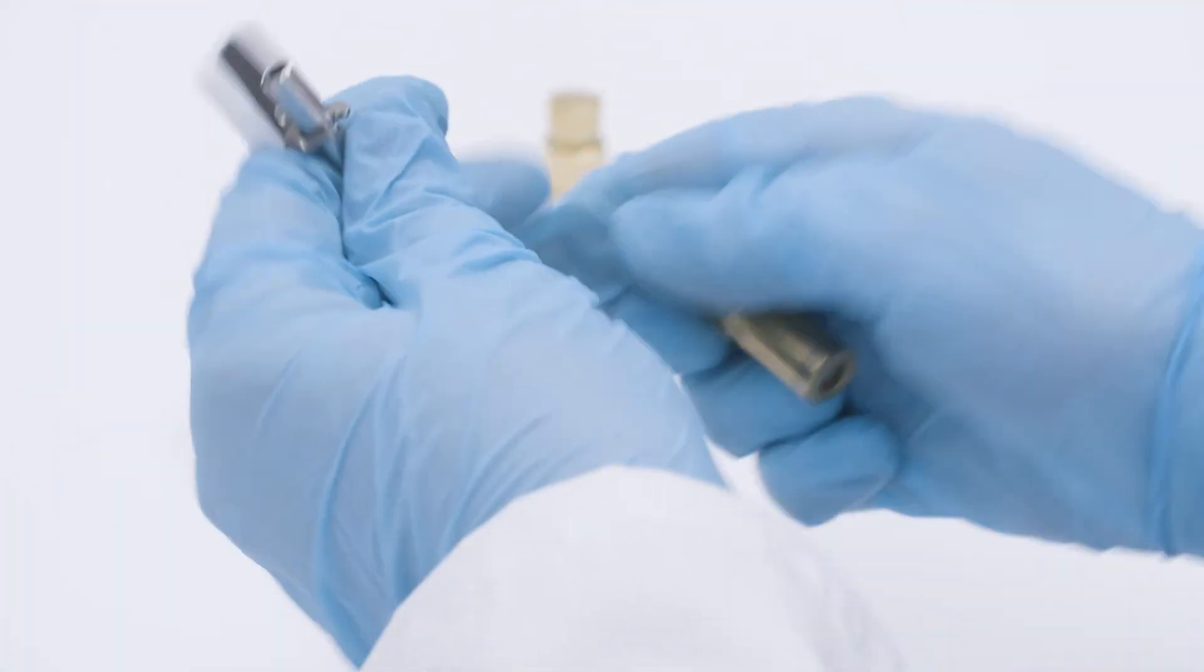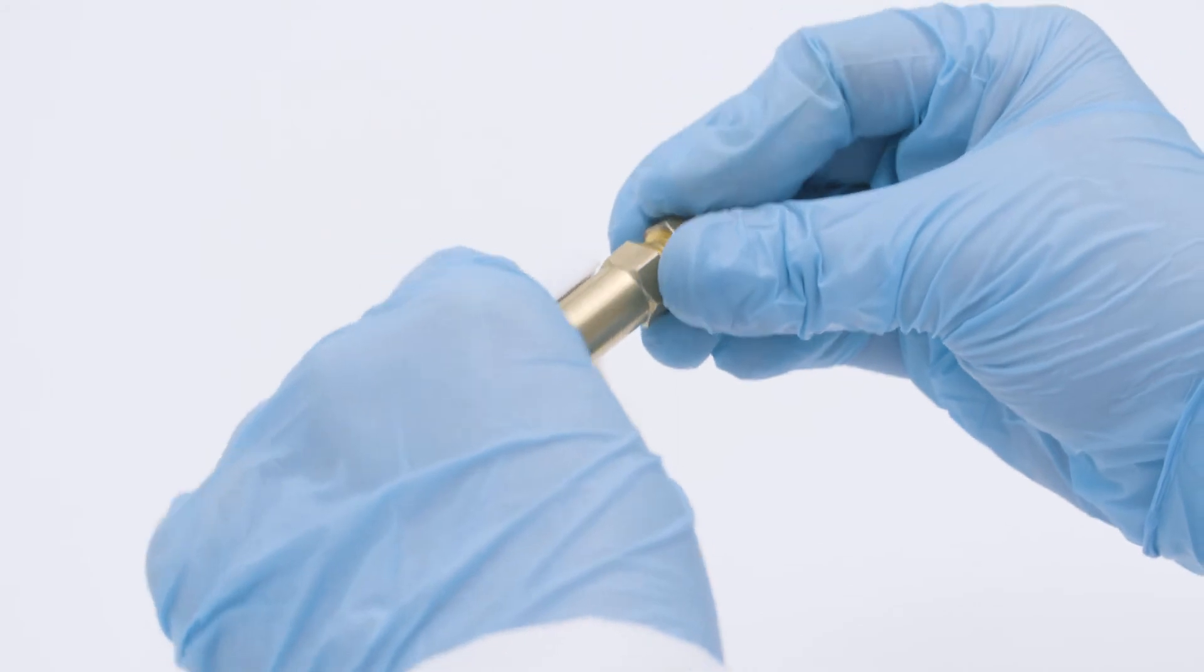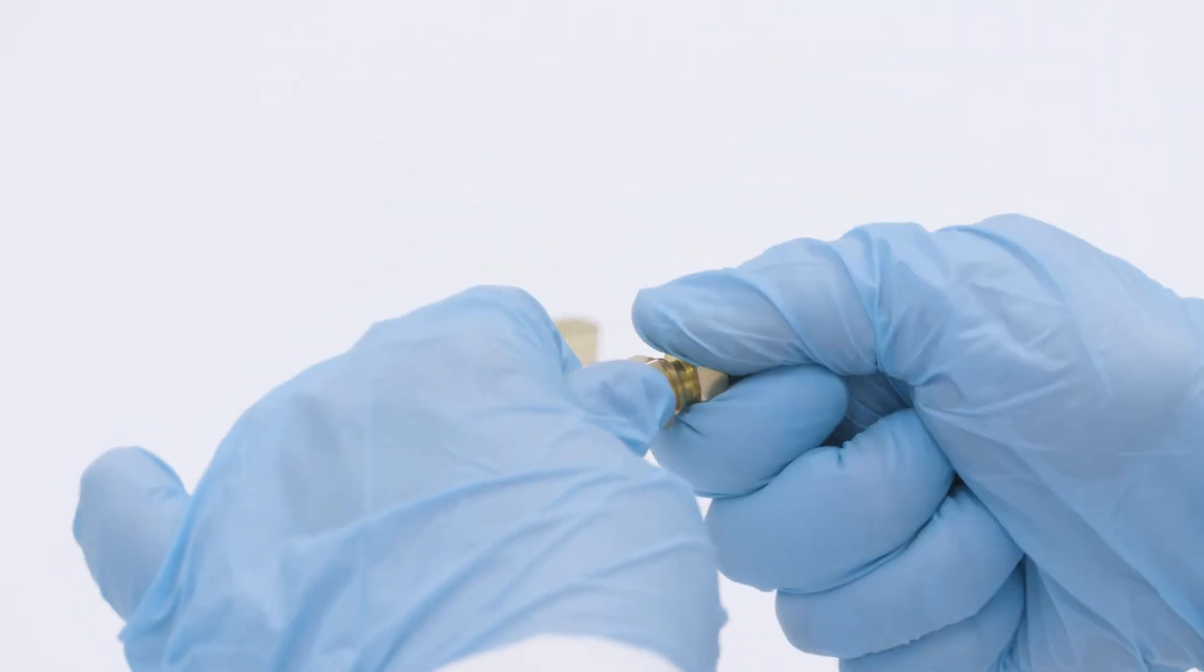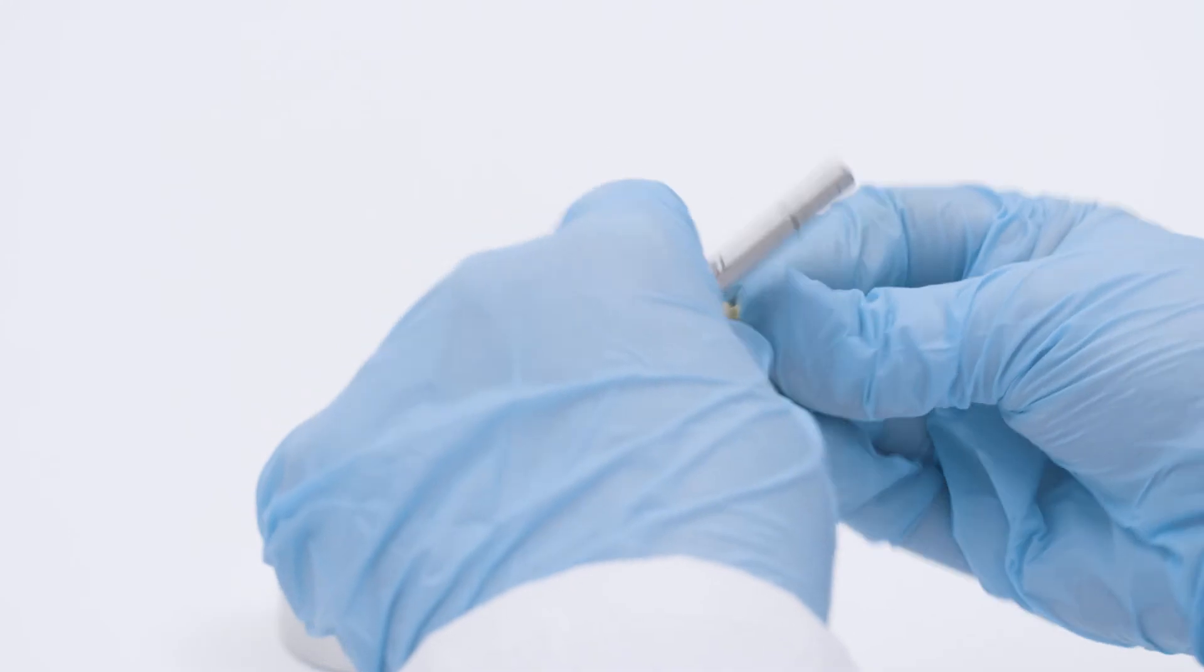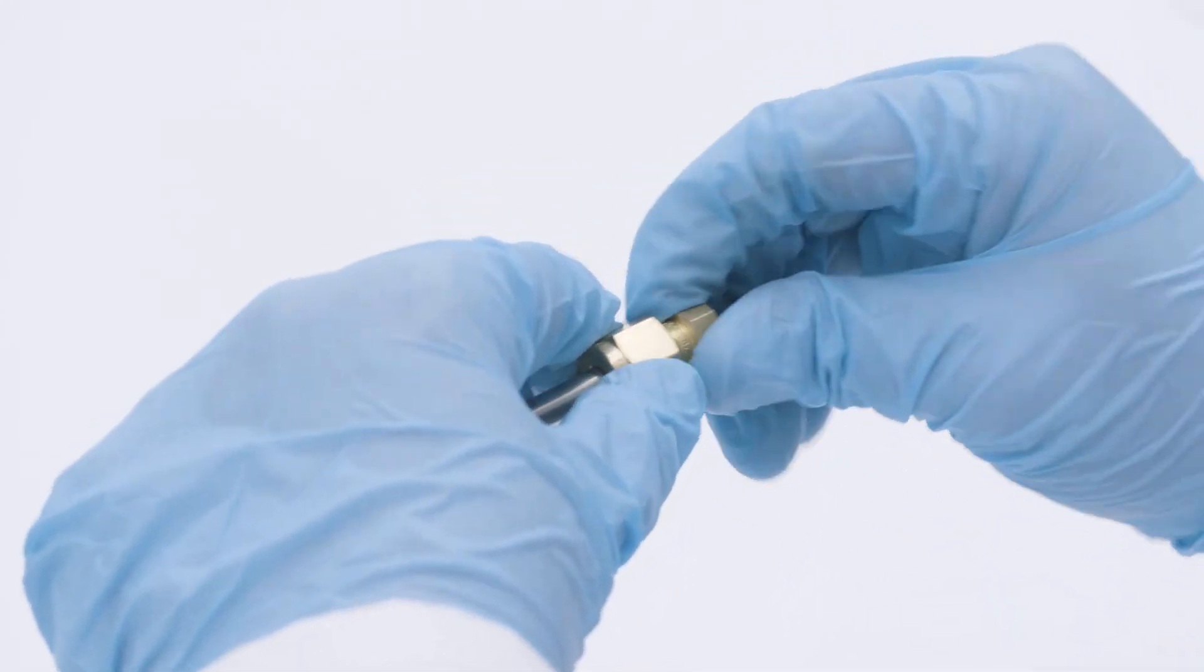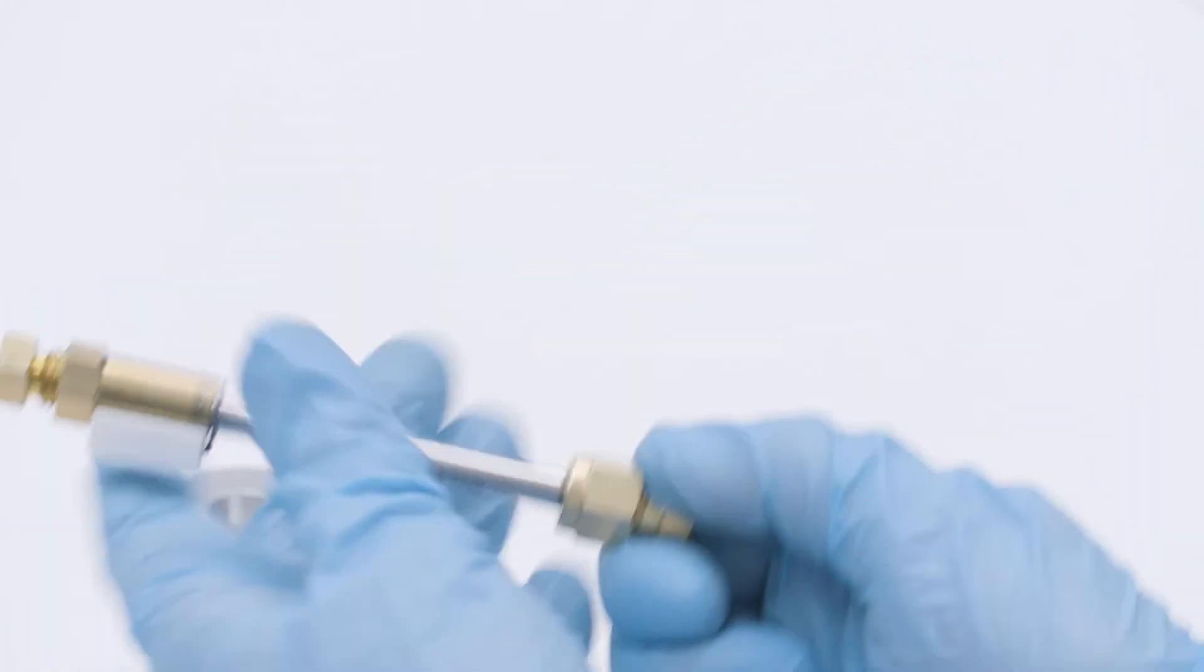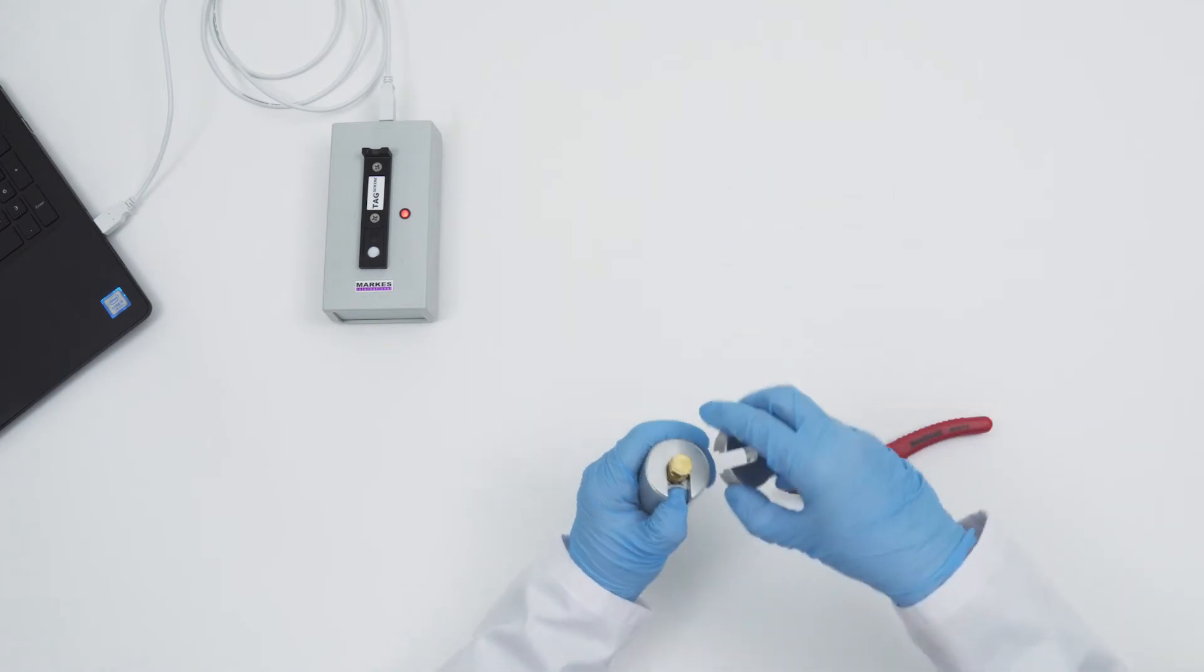Once conditioned, place a tag-ready long-term storage cap onto the non-sampling end of the tube and a long-term storage cap on the sampling end. Finger tighten each cap before quarter turning using a TagLock tool.